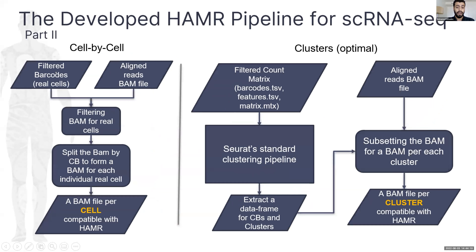For part two, we have two different routes: cell-by-cell and cluster-based. The main difference is that in the cell-by-cell approach, HAMR detects modifications at the single-cell level. For cell-by-cell processing, we filter the BAM for real cells using the filtered barcodes detected by STARsolo, and then split the BAM by the CB tag of the cell barcodes to produce a BAM file for each cell.